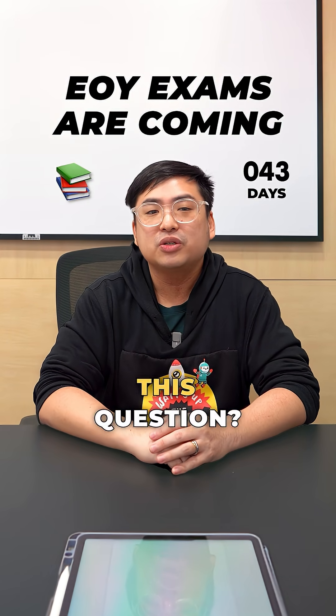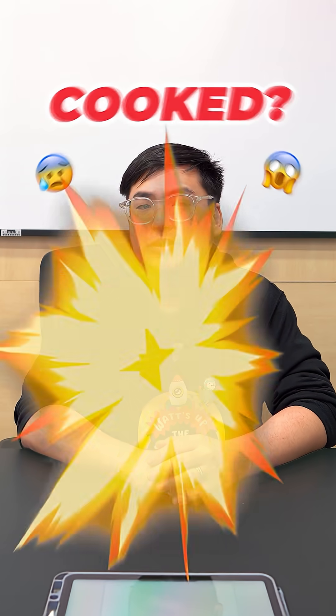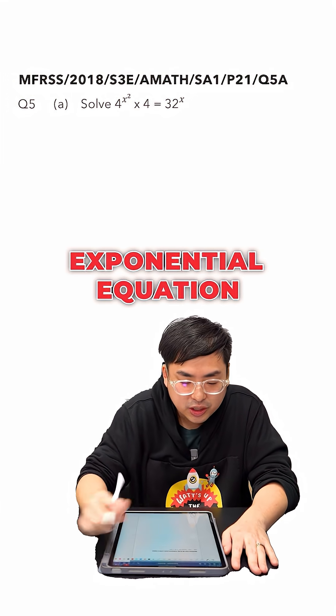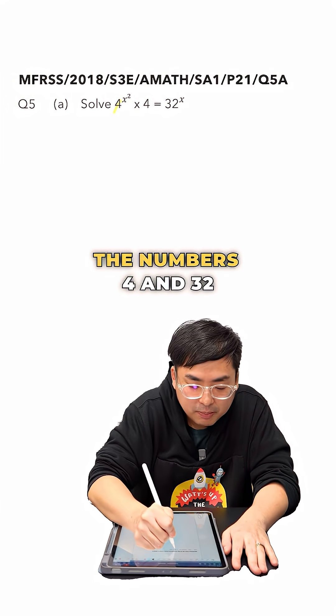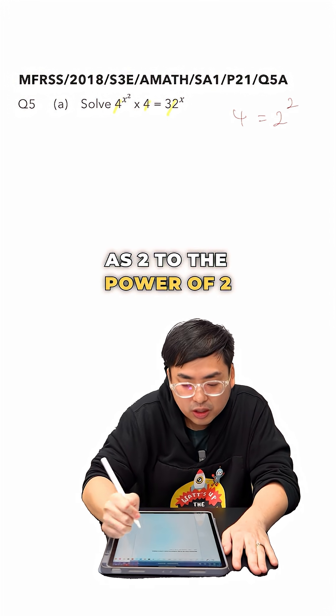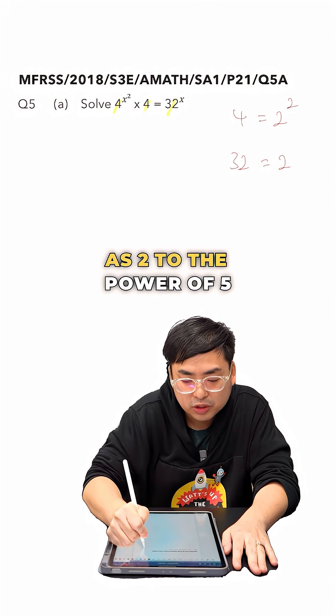Hey SAC3 students! Do you think you can solve this question? Or are you cooking? In this question, we are required to solve the following exponential equation. We will begin by studying the numbers 4 and 32. We note that 4 can be written as 2 to the power of 2, while 32 can be written as 2 to the power of 5.